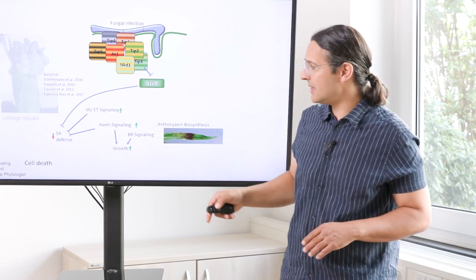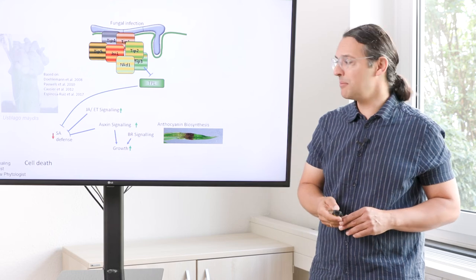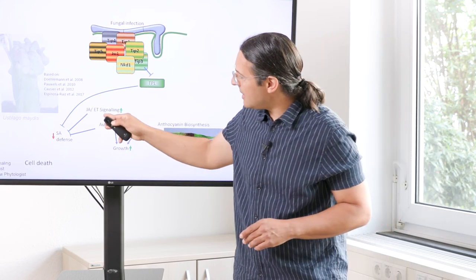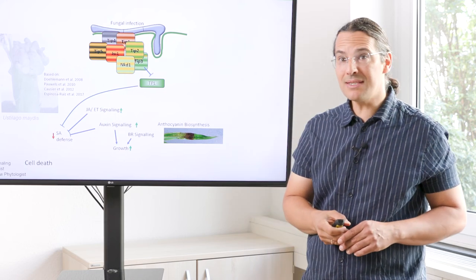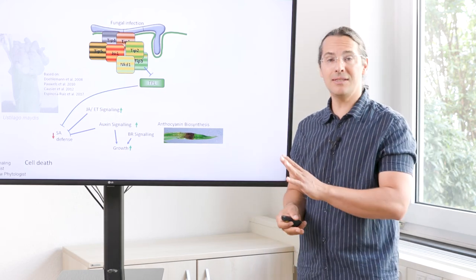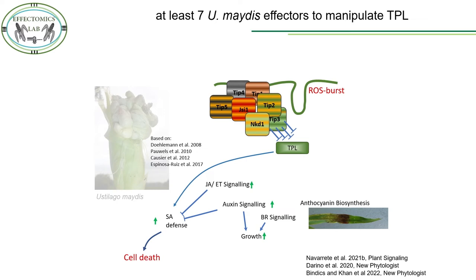At the transcriptomic level, GA and ethylene signalling are upregulated. And due to the intrinsic antagonism, we see suppression of the salicylic acid defence signalling pathway, which would otherwise target Ustilago maydis. We furthermore show in our publication that if Topless is over-manipulated, the plant has a built-in protection mechanism leading to salicylic acid defence responses and cell death, thereby protecting itself from the pathogen.